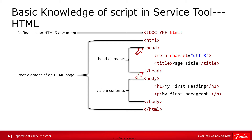The HTML element is the root element of an HTML page. The head element contains the meta information about the HTML page. The title element specifies a title for the HTML page — it is shown in the browser's title bar. The body element defines the document body, and is a container for all the visible contents, such as headings, paragraphs, images, hyperlinks, etc. The h1 element defines a heading. The p element defines a paragraph.